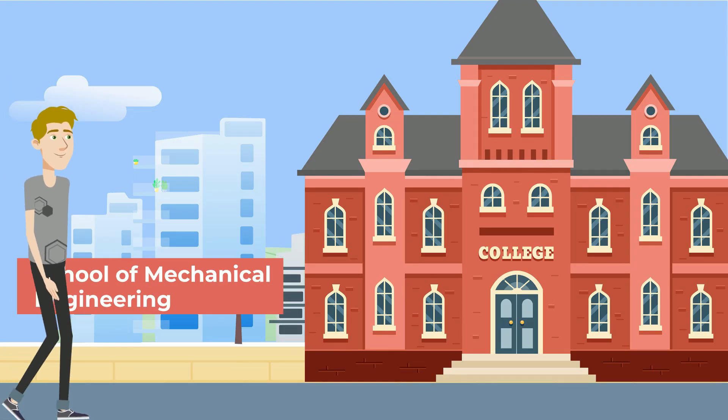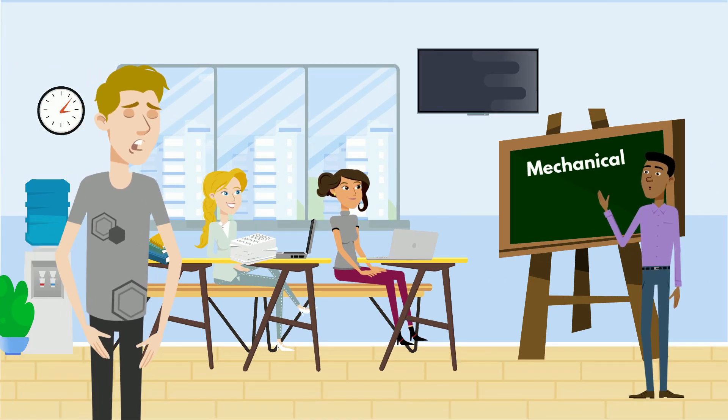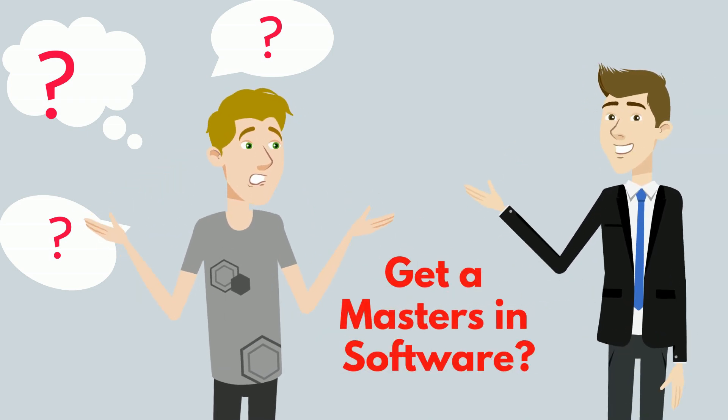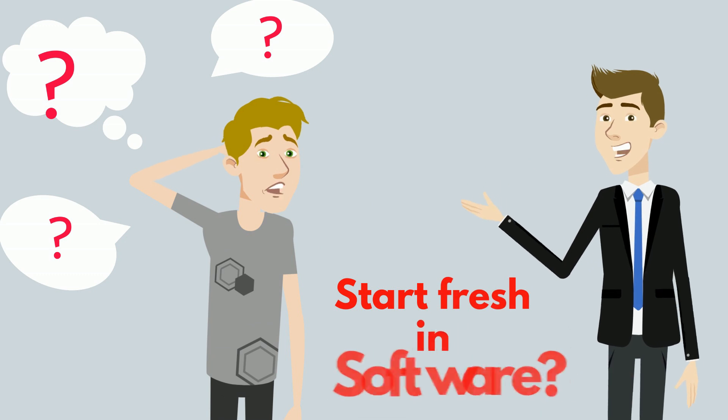Let me give you a scenario. Imagine you enter a mechanical engineering degree and then three years into it, you realize you like software engineering even better. What do you do? Play out the last year of the degree then get a masters in software? Throw away the three years and start fresh in software?